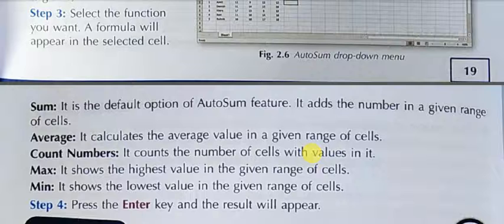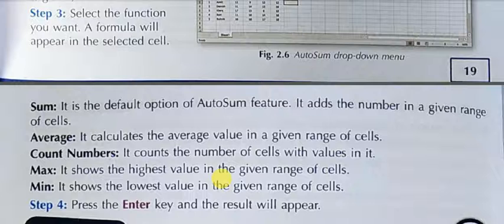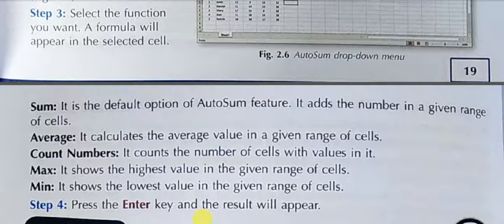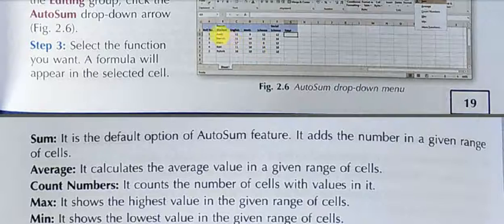Max shows the highest value in the given range, and min shows the lowest value in the given range. After that, press Enter. Always remember, AutoSum only works when the cells are continuous. When cells are continuous, then only it will work.